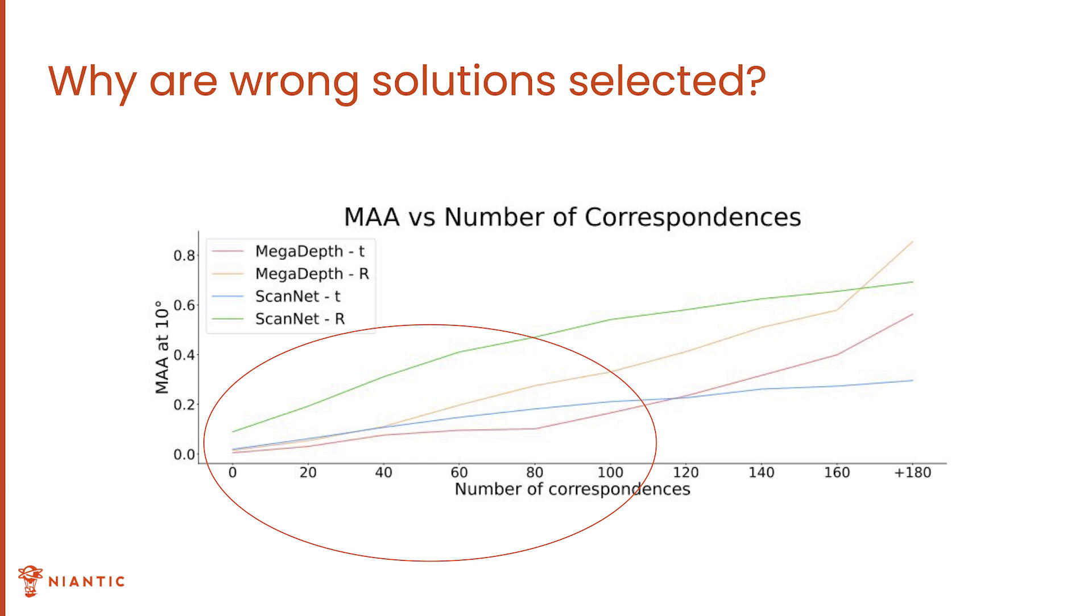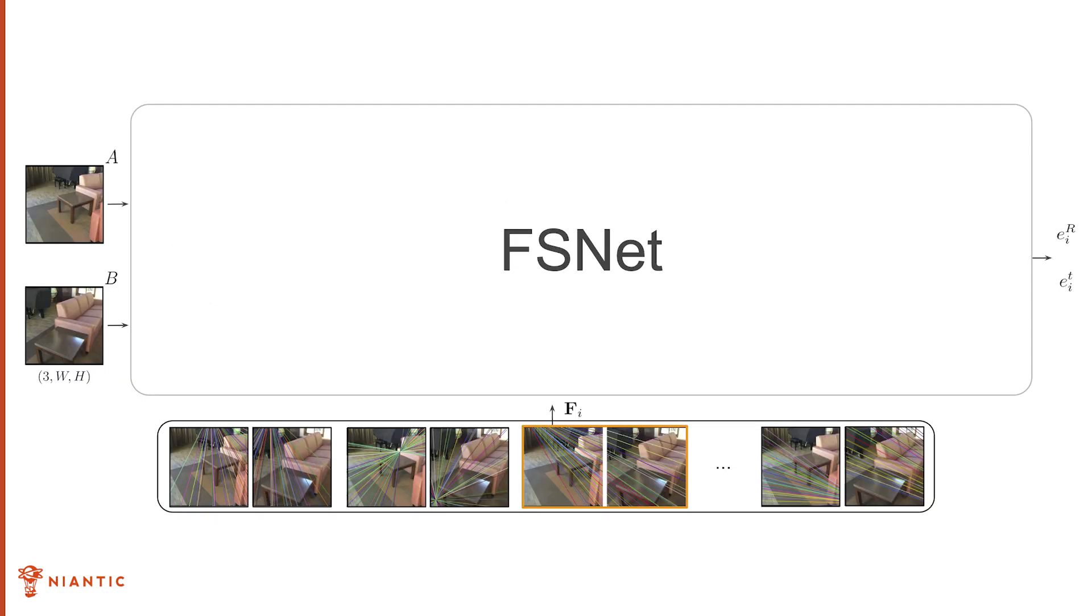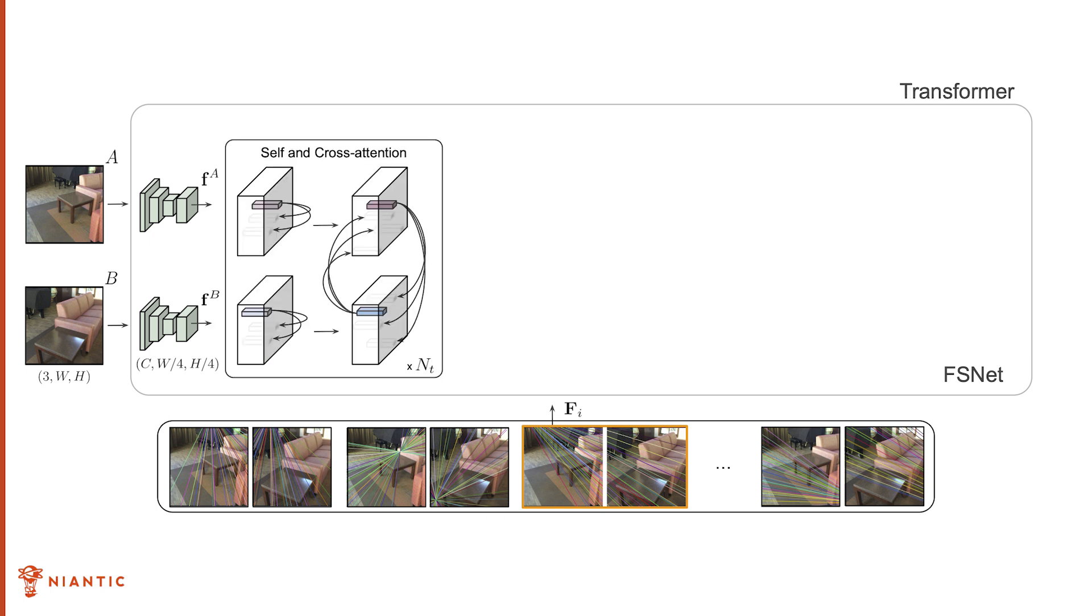To score hypotheses, we present FSNet, a network that estimates the pose error of the fundamental matrix hypothesis. First, we use a CNN to extract feature maps from the two input images. Then a transformer network exchanges information between the two images using self- and cross-attention layers. The output features are reused for every input fundamental matrix hypothesis.